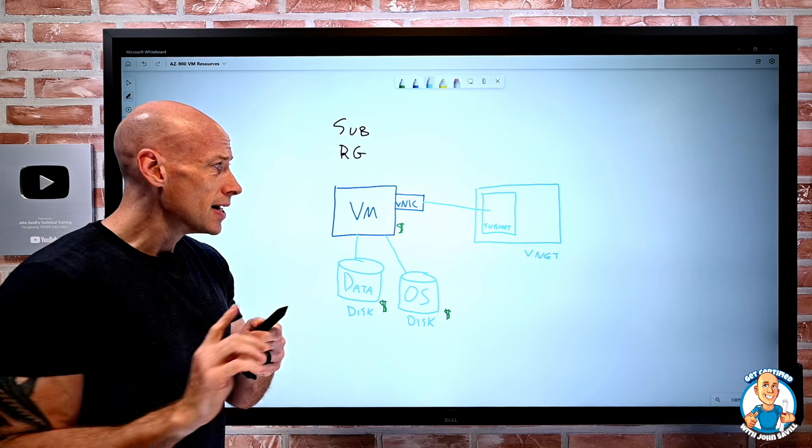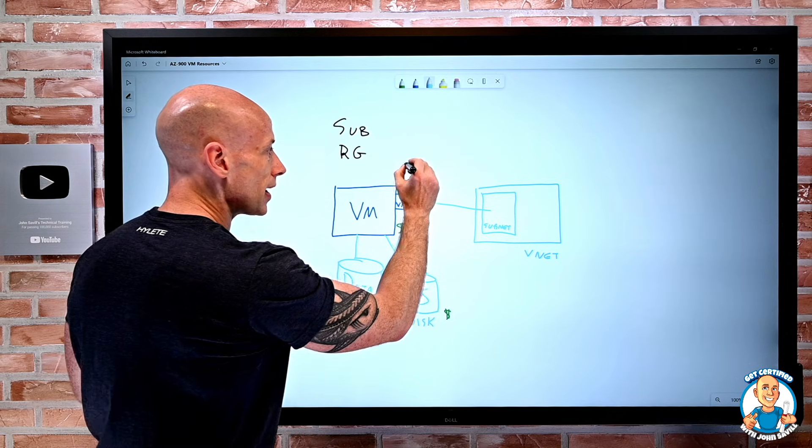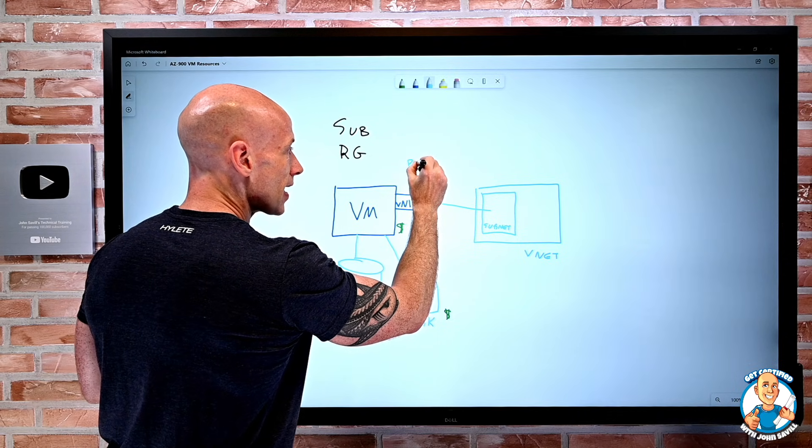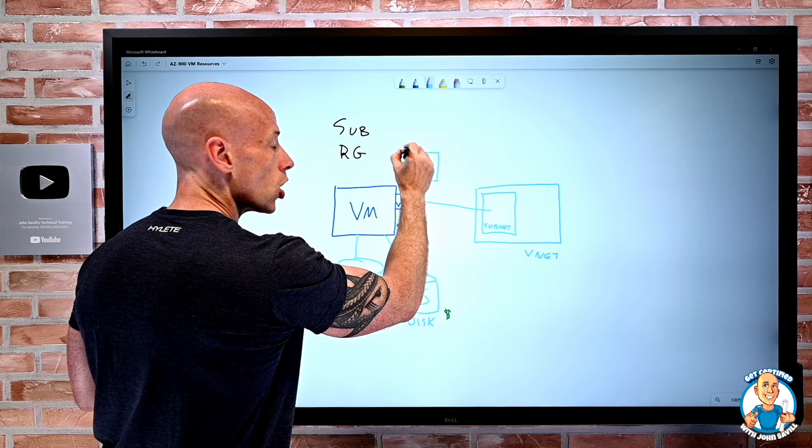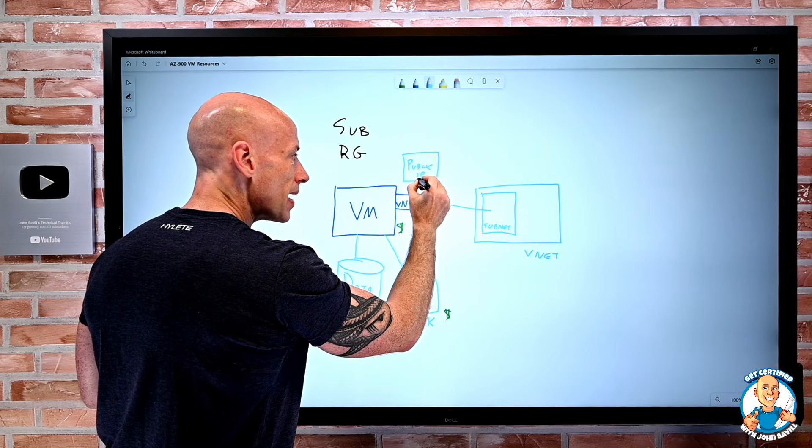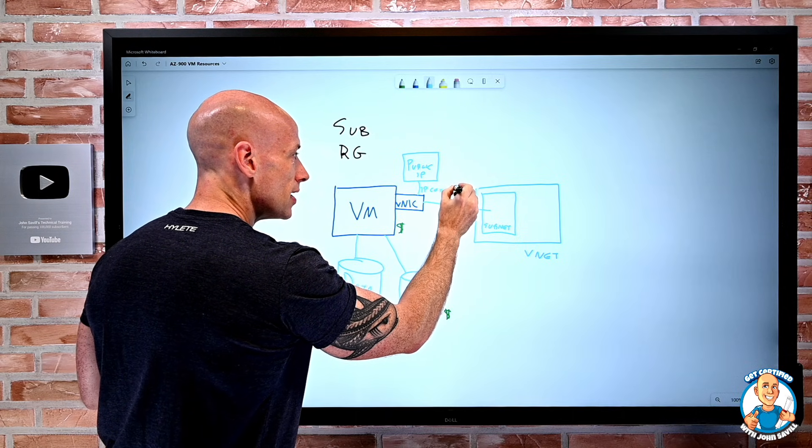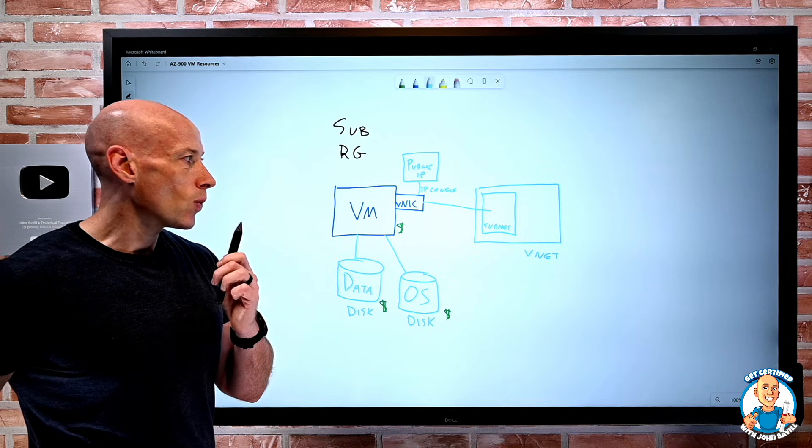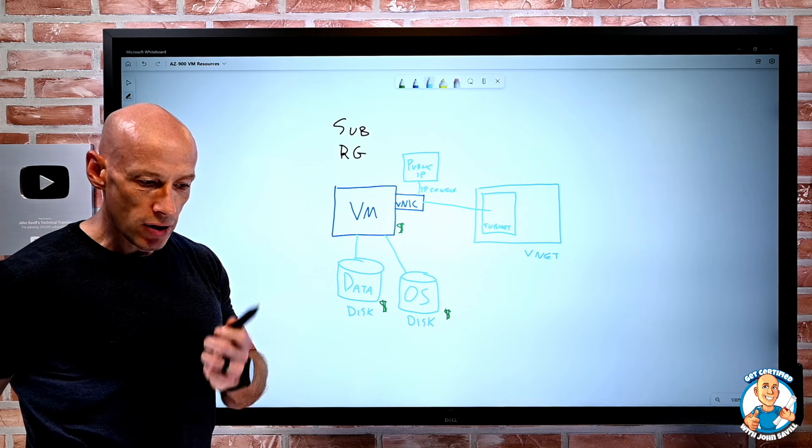Now, additionally, as part of that NIC, there are IP configurations. We may optionally have things like a public IP that is, again, its own resource that we may bind to one of those IP configurations. So it has an instance level public IP. So once again, that public IP is its own resource.